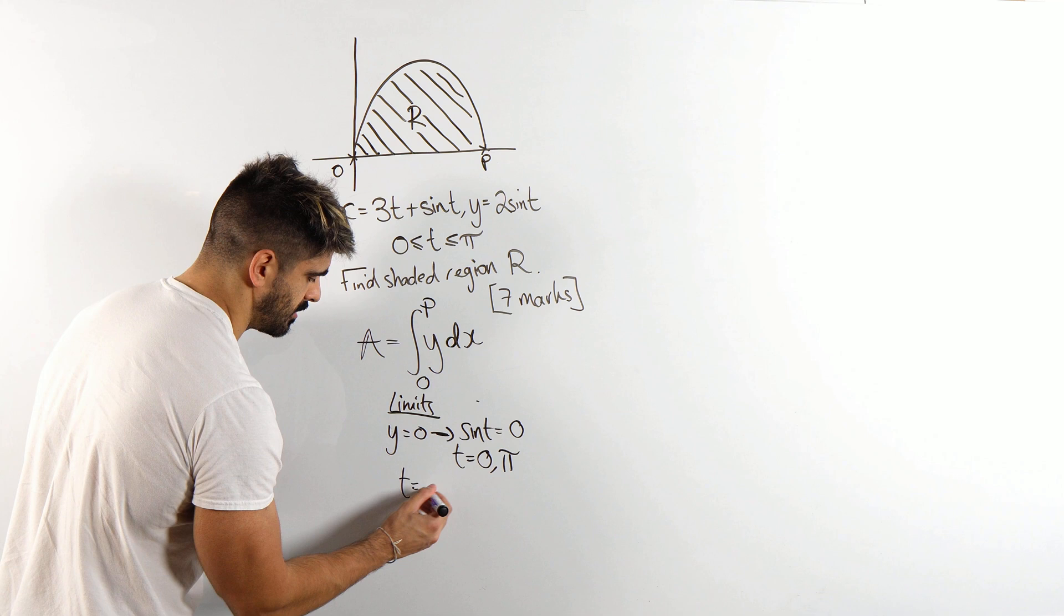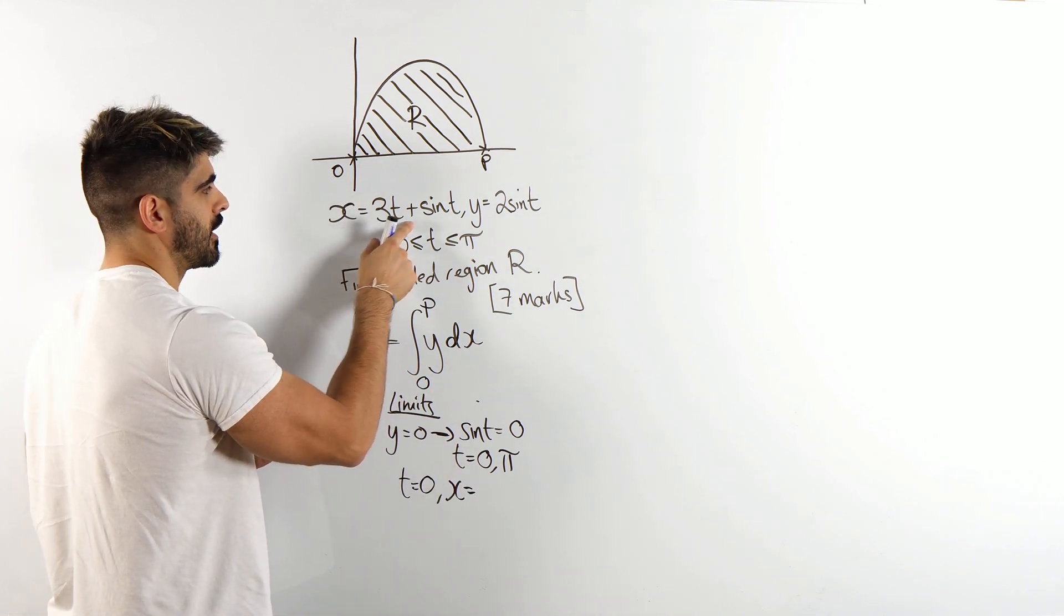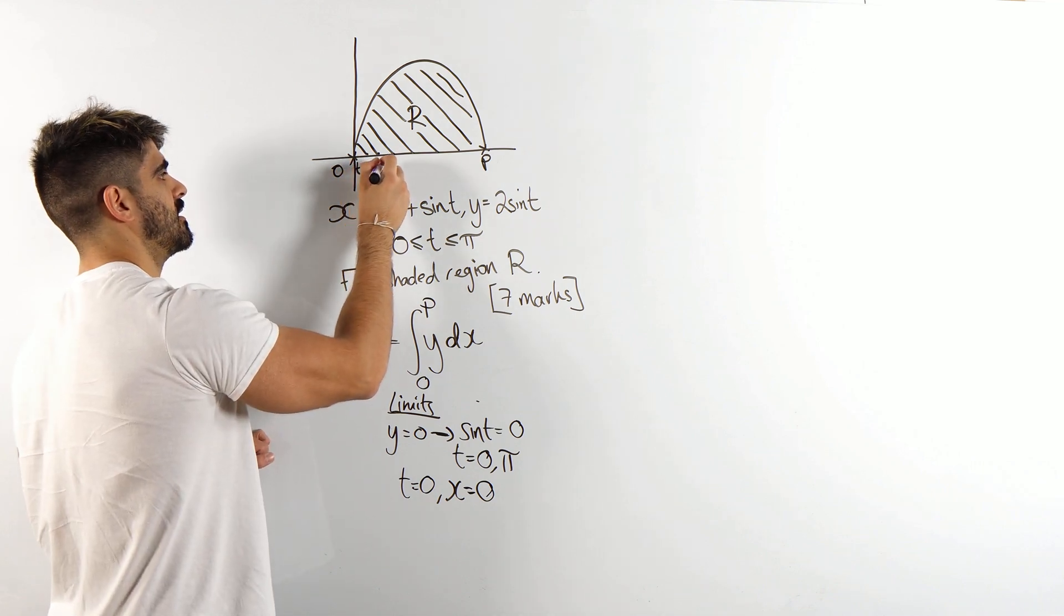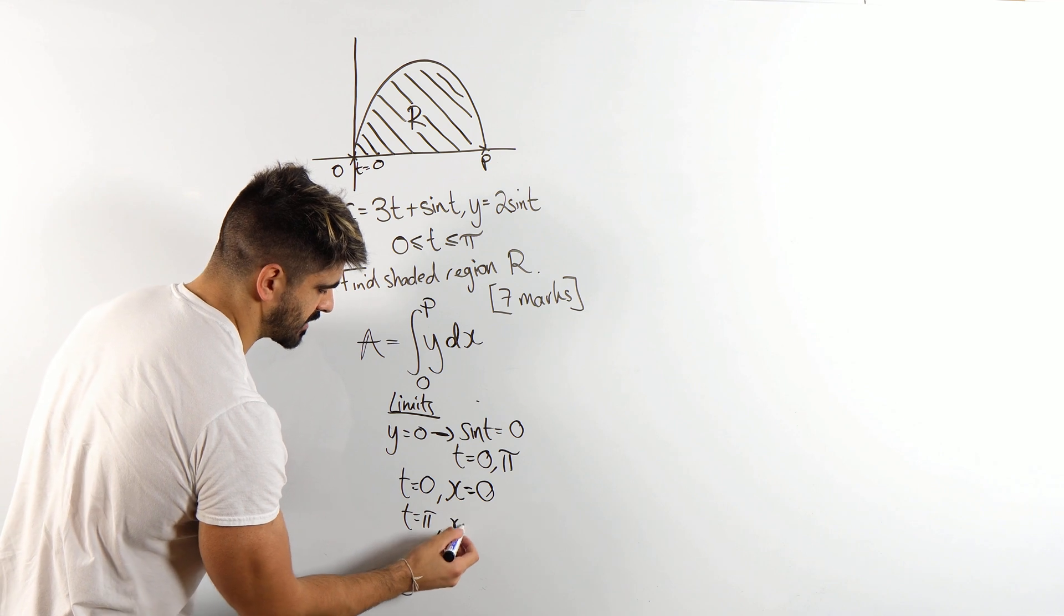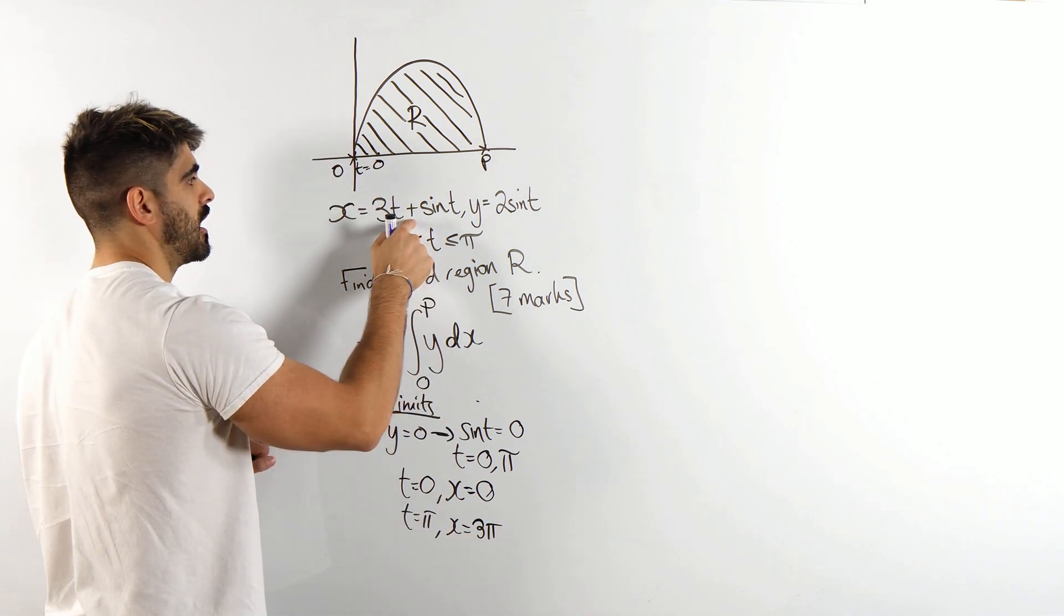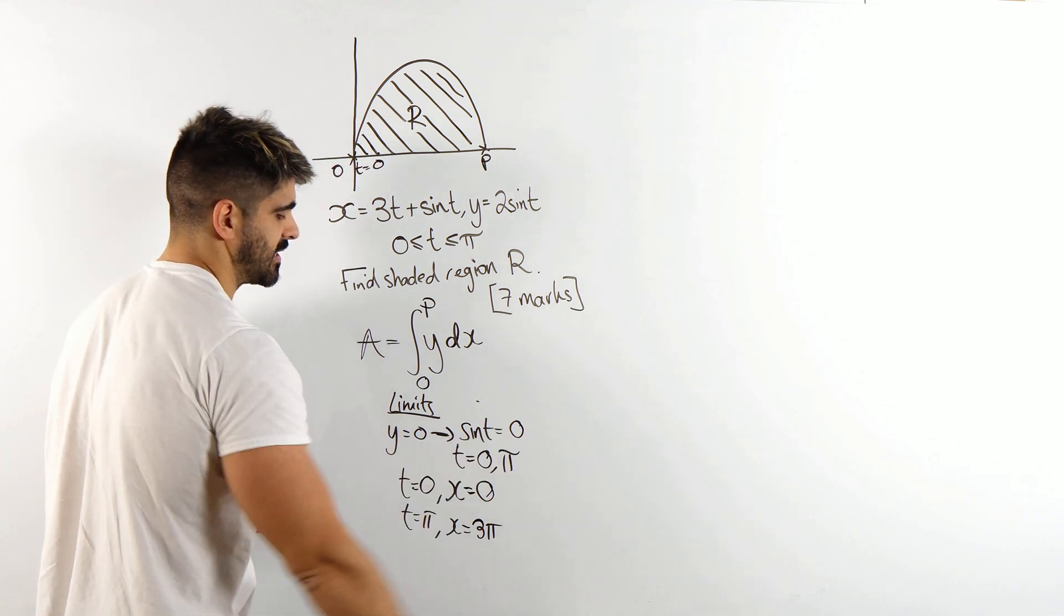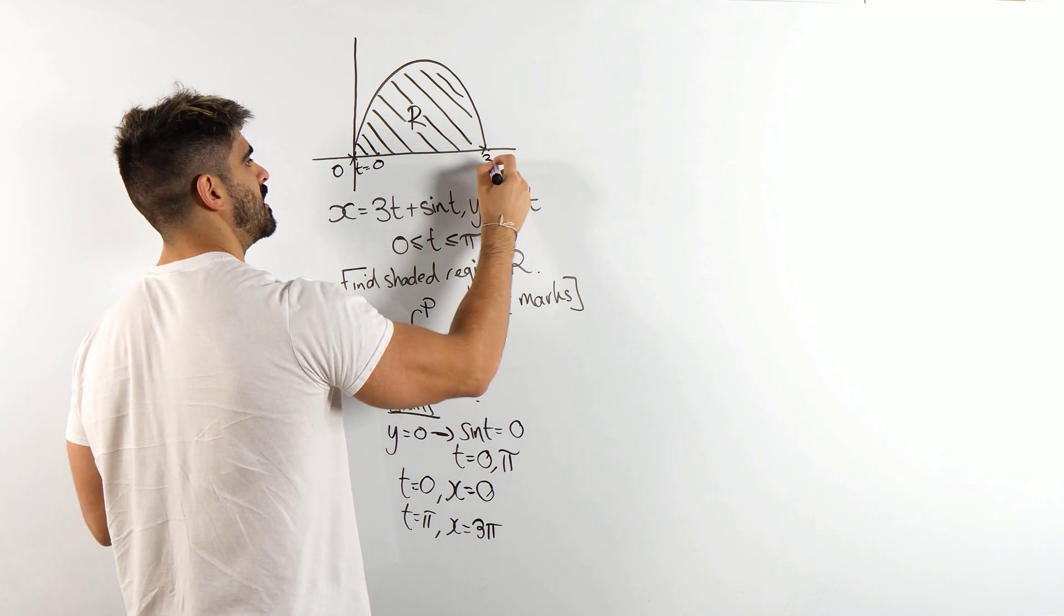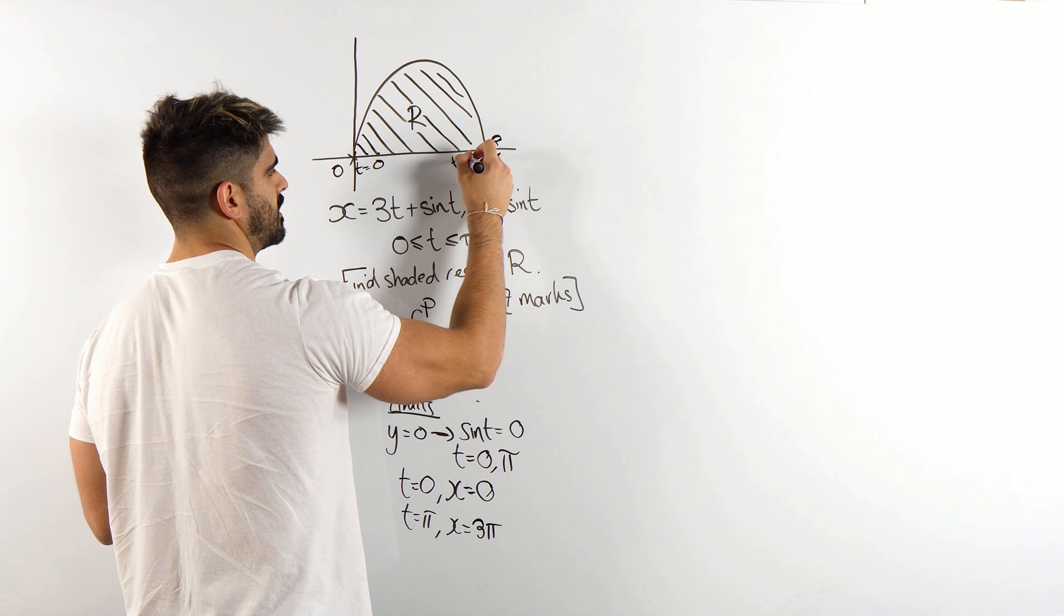So when t is 0, what's the x value? We're just going to plug in here. 0 plus 0. Cool. So here, t is 0. Now when t is pi, what x value do you get? You'll get 3 pi plus sine of pi, which is 0. We know sine t is 0 at that point. So here, this x value, if I just remove the p, is 3 pi. And here, t is pi.